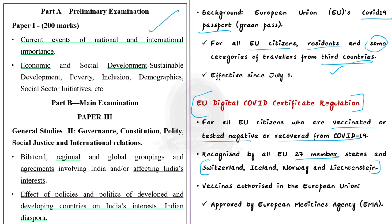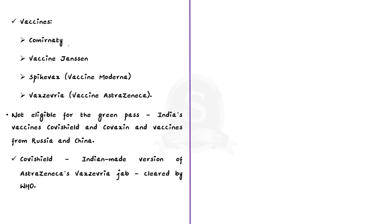The issue is that only certain vaccines approved by the European Medicines Agency (EMA) qualify. These include Comirnaty (Pfizer-BioNTech), Janssen (Johnson & Johnson), Spikevax (formerly Moderna), and Vaxzevria (formerly AstraZeneca). So EU citizens vaccinated with these will have recognized certificates. However, not all of these vaccines are used in other major countries. For example, India uses Covishield and Covaxin. Even though Covishield is the Indian-made version of AstraZeneca's Vaxzevria, it is not recognized by the EMA.